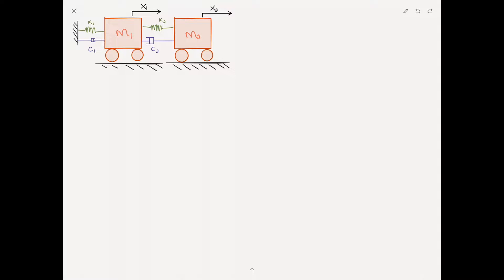The first thing we do using Lagrange's equations is find the kinetic energy of the system. We call it T, which equals one half mv squared for each mass. So it's one half m1 x1 dot squared plus one half m2 x2 dot squared. We'll call that equation 1.